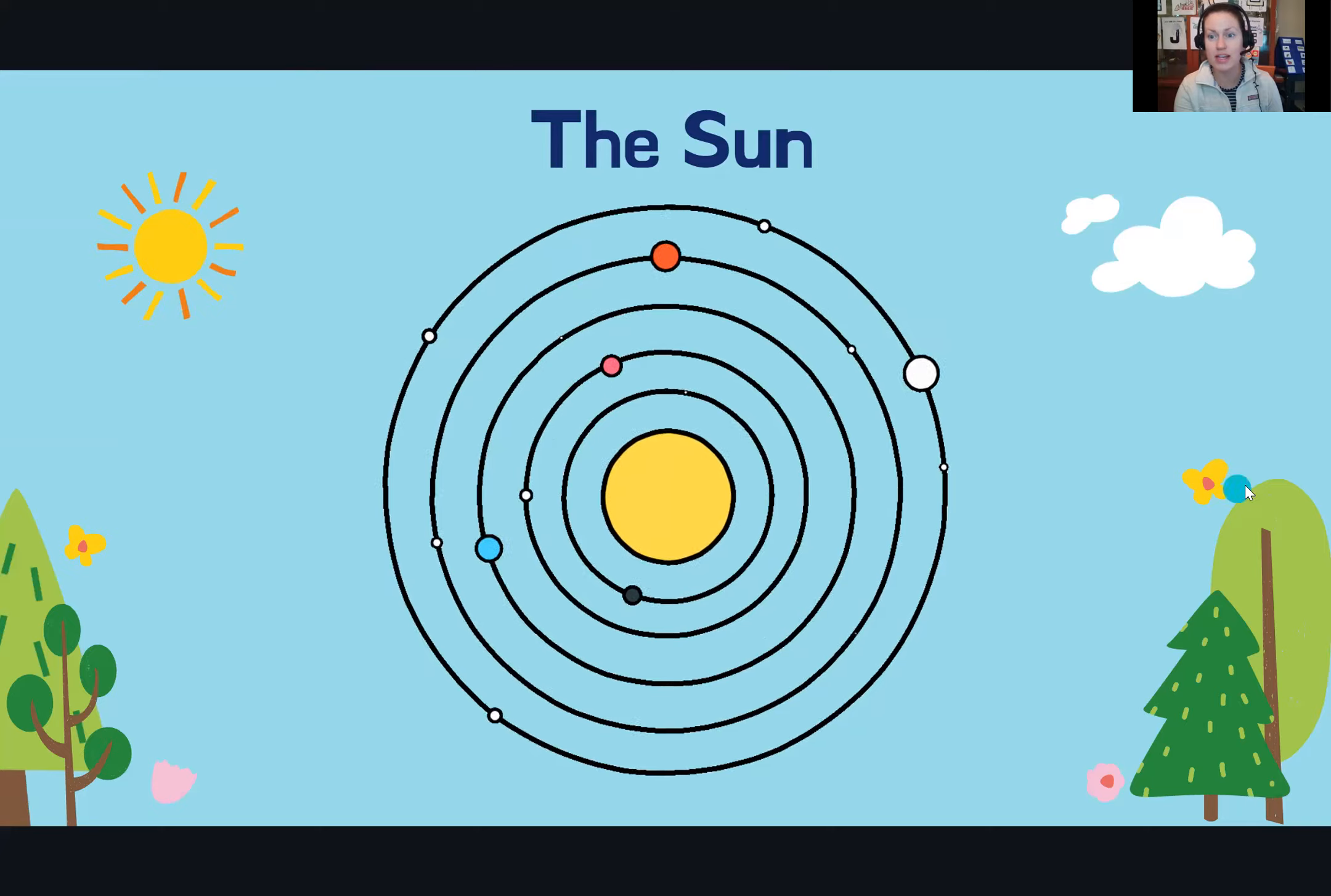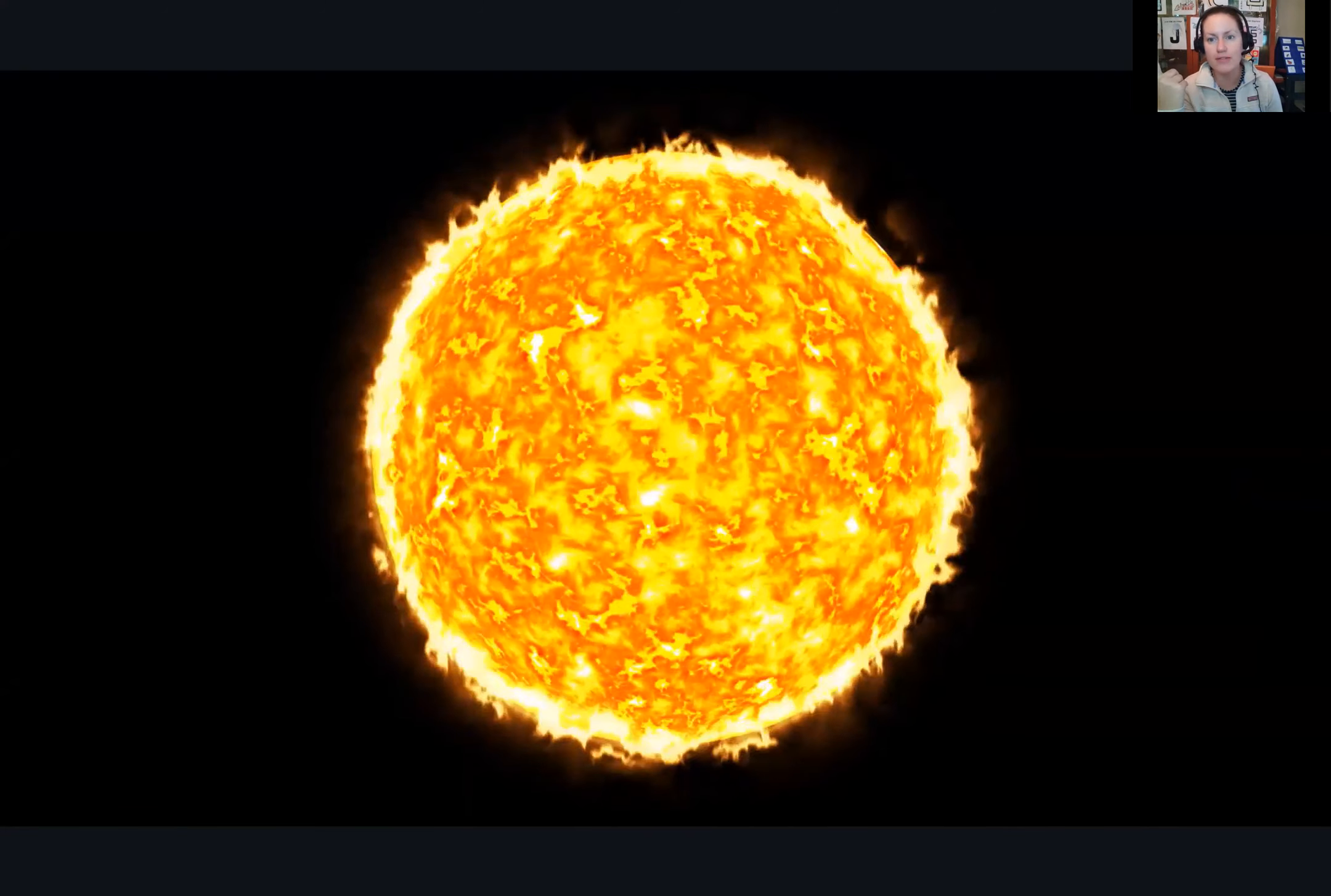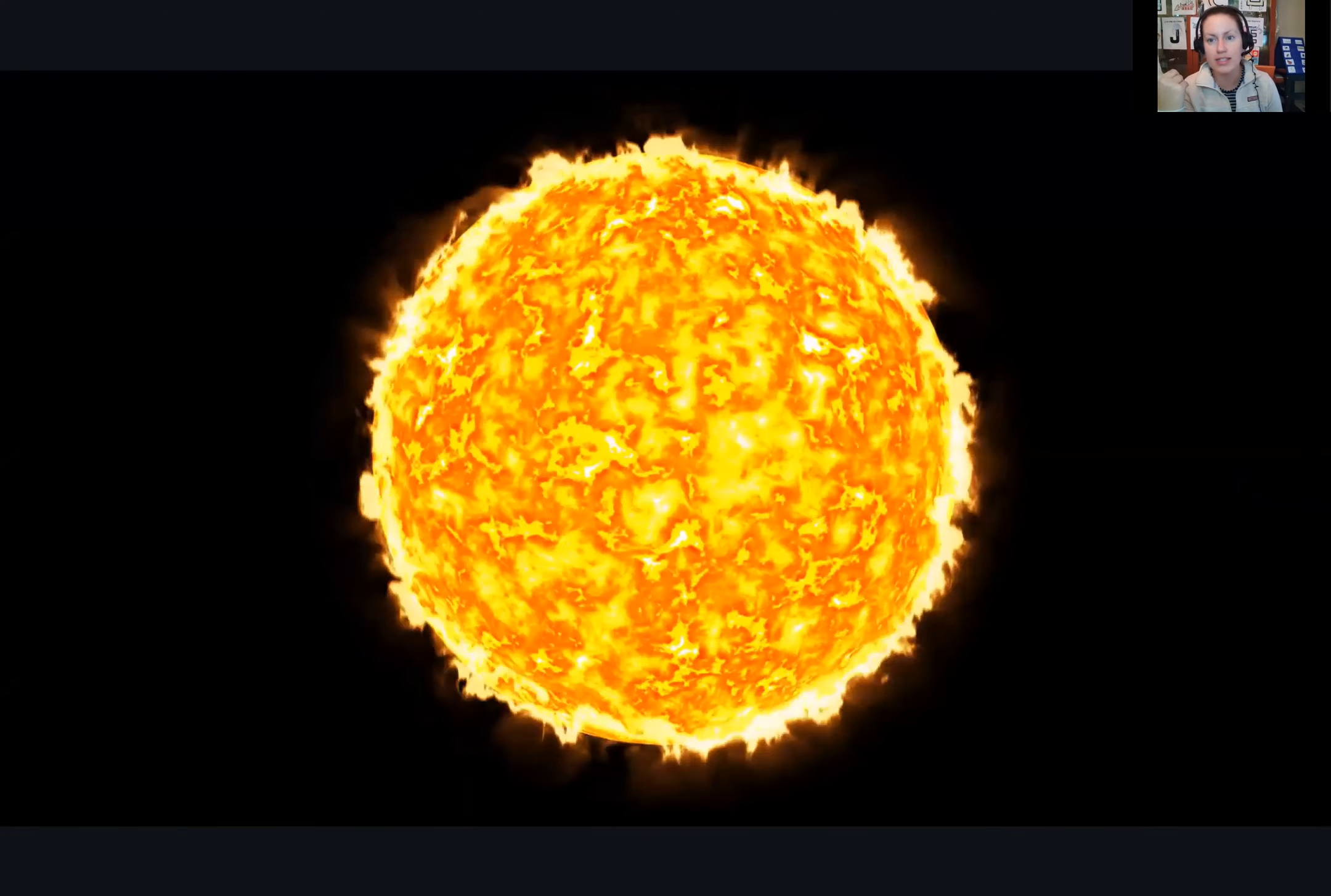The sun is our closest star. It's what gives us our warmth and our light. Our motion around it gives us our seasons, and what part of the earth is facing the sun is what gives us our night and day.